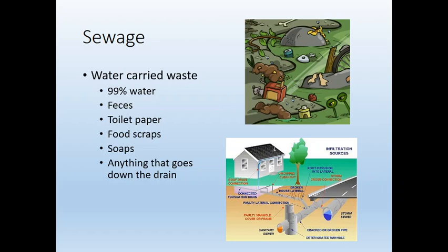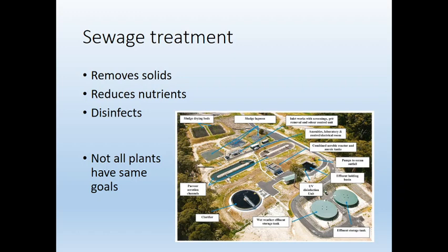In the US, most of that water does not just dump out in a river somewhere — it goes to a sewage treatment plant. Not all plants have the same goals, but there are basically three points to a sewage treatment plant: removing solids, reducing the nutrients, and disinfecting the water, because they want the water coming out to be okay to just dump in a river.